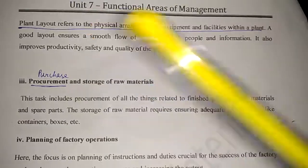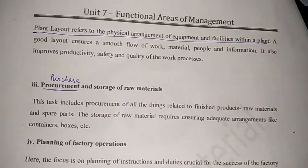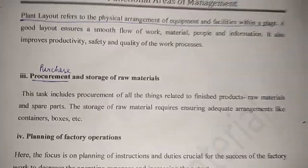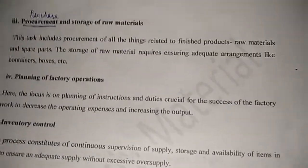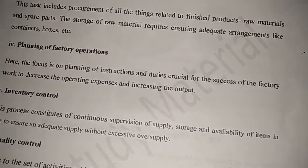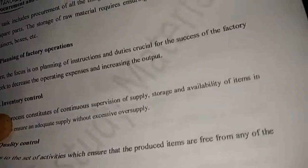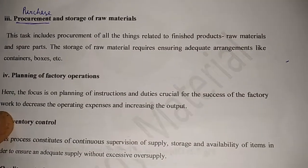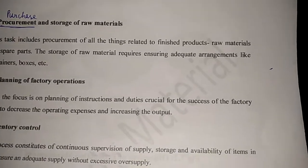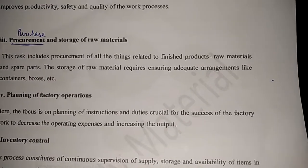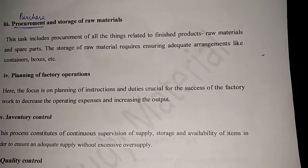Next is procurement and purchase of raw material. This point includes all about the purchase and storage of raw material. It includes the purchase of all things related to the finished products, like raw material and spare parts. Storage of raw material requires ensuring adequate arrangements like containers and boxes.